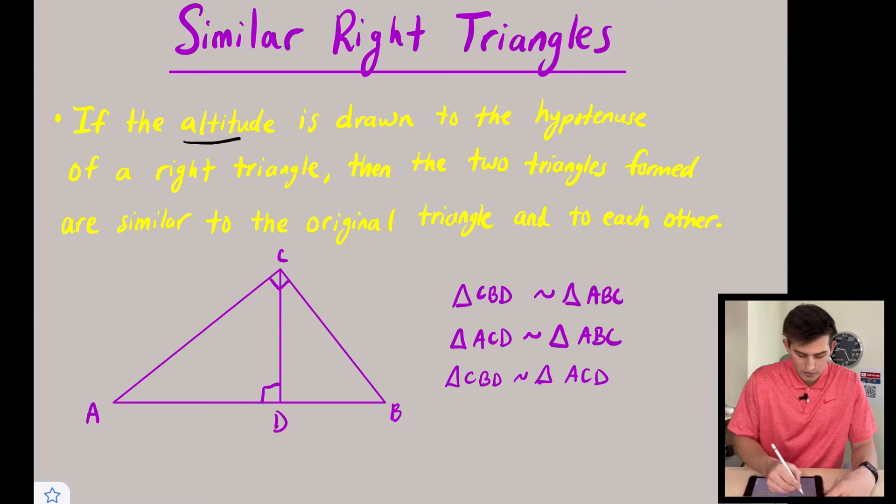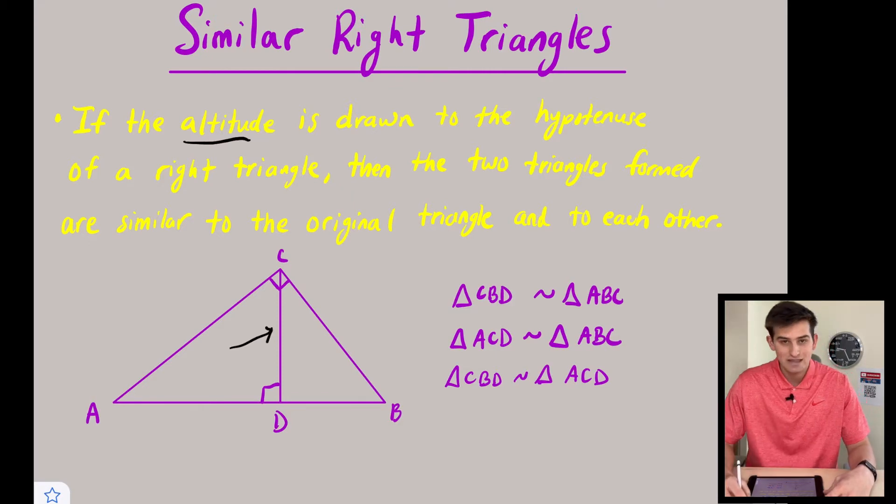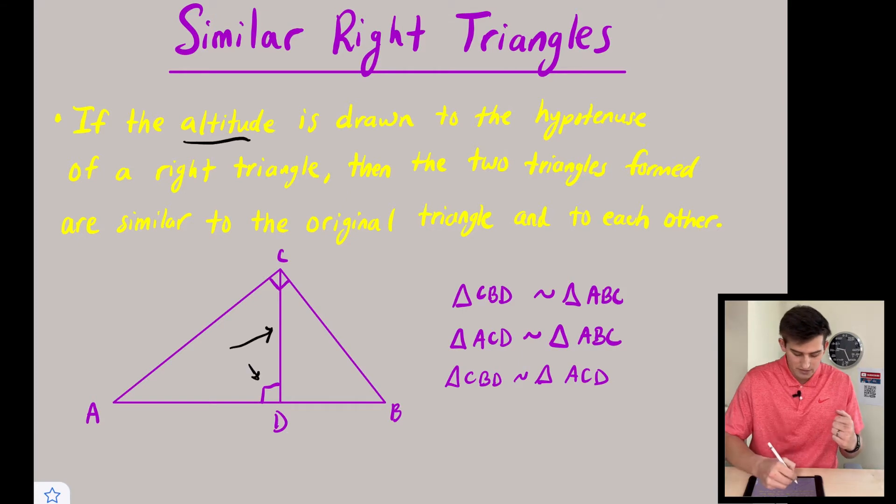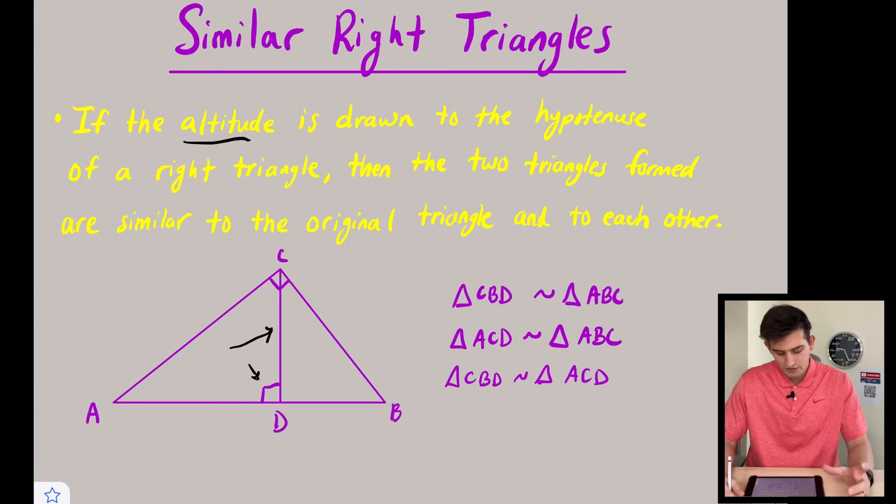So let's review what this word altitude means. Altitude is our segment right here CD, which is going to be a perpendicular segment, so that's where this right angle box comes into play. And it's going to go through one of our vertices, so in this case it's vertex C. So our altitude is drawn to the hypotenuse of our large triangle.